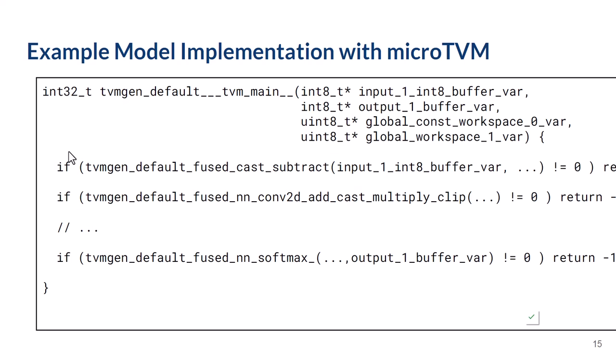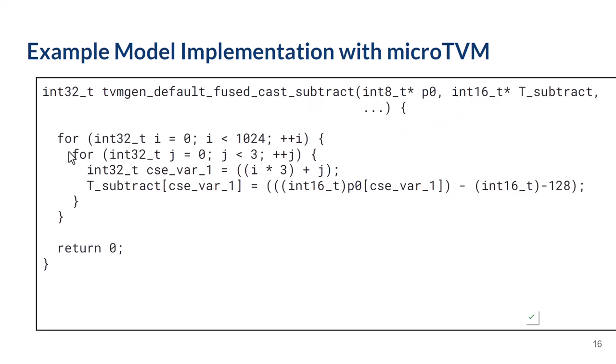These layers could be calls into an off-the-shelf library like CMSIS-NN, but TVM can also generate its own optimized kernels for any hardware that MicroTVM can run on. Looking at those optimized kernels, again it's just plain C. Firmware developers can take the output of this compiler, inspect it, debug it, and work on it.